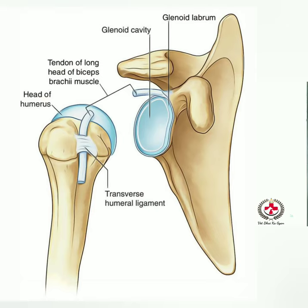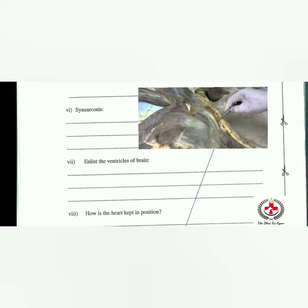Glenoid cavity: a shallow depression on a bone into which another bone fits to form a joint. Example: the depression in the scapula into which the head of the humerus fits to form the shoulder joint.